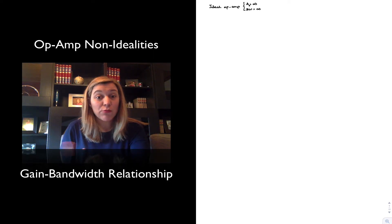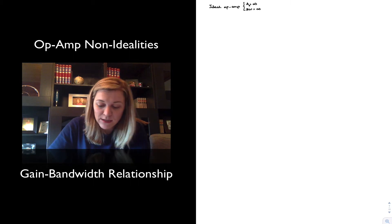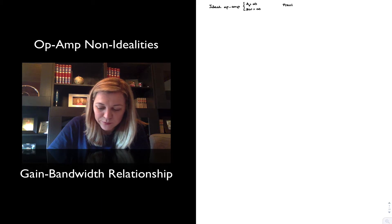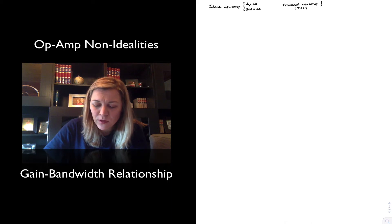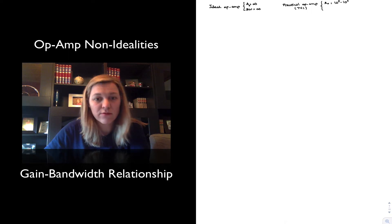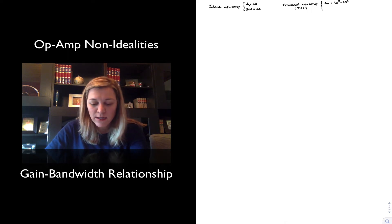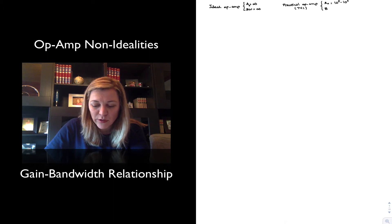Of course, in a real op amp, that's not the case. Infinity values are never realizable in practice. For a practical op amp — using the 741 as the reference — the open loop gain is going to be on the order of 10^5 to 10^6 volts per volt, and the typical bandwidth is going to be on the order of 1 megahertz.